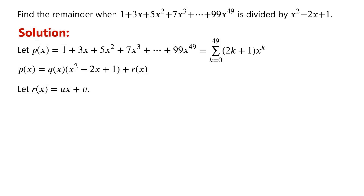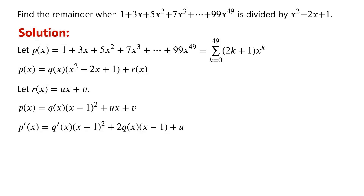To find the remainder, we just need to evaluate u and v. P of x can be written as Q of x times (x minus 1) all squared, plus ux plus v. The derivative P dash of x is equal to Q dash of x times (x minus 1) all squared, plus 2 times Q of x times (x minus 1), plus u.